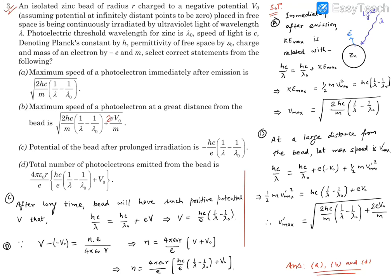Question 3. It reads: an isolated zinc bead of radius R charged to a negative potential V0, assuming potential at an infinitely distant point to be zero, placed in free space is being continuously irradiated by ultraviolet light of wavelength lambda. Photoelectric threshold wavelength for zinc is lambda naught. Speed of light is C. Planck's constant is H. Permittivity of free space is epsilon naught. And the charge and mass of the electron is minus E and M. We need to select the correct statement from the following.